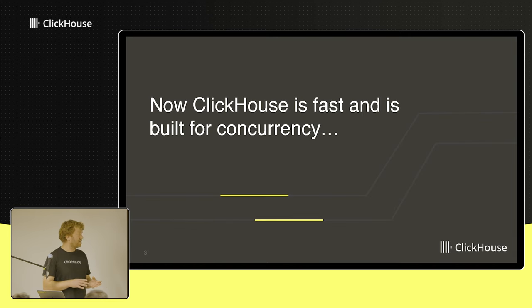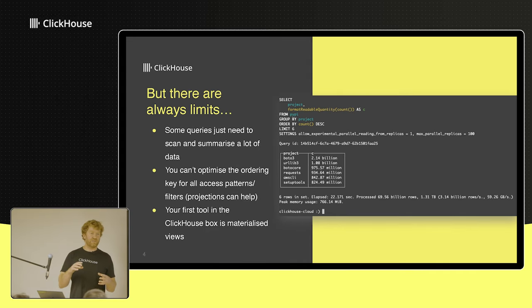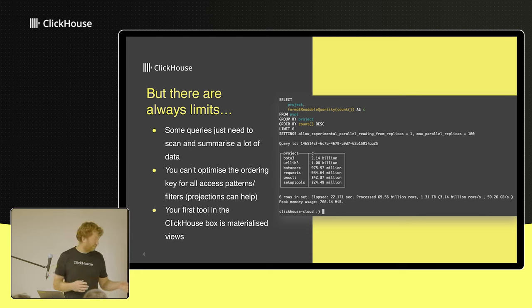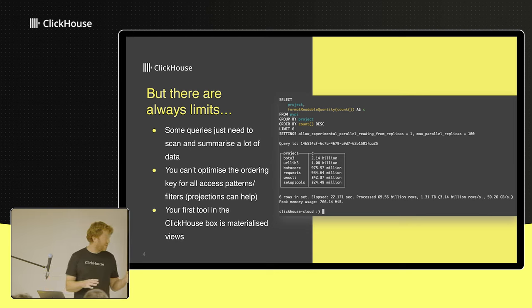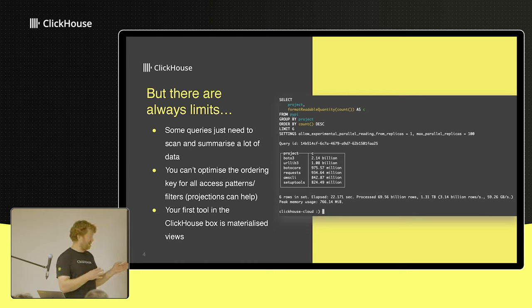ClickHouse is fast and built for concurrency, so it meets a lot of the properties we need, but there are always limits. Some queries just need to scan all the data and perform a linear scan — those are particularly expensive, and you can't optimize the ordering key for every single access pattern. Many of you probably have queries which, if they go outside the ordering key, revert to a full table scan. If you want to load the landing page on an application, typically the user hasn't applied a filter yet and you're forced to do a full table scan.